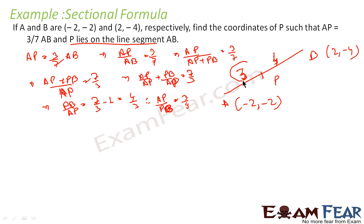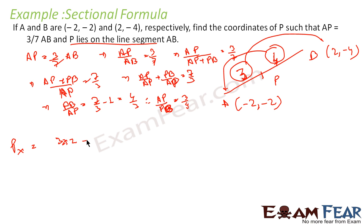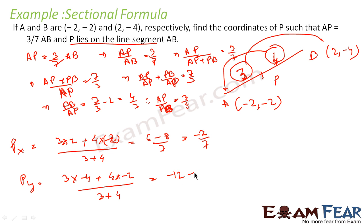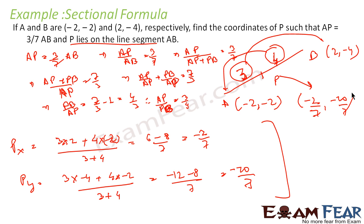Now with ratio AP:PB = 3:4, we can apply the section formula. The x-coordinate of P is (3×2 + 4×(−2))/(3 + 4) = (6 − 8)/7 = −2/7. Solving the y-coordinate similarly, we get P as (−2/7, −20/7), and that is our answer. Very simple.